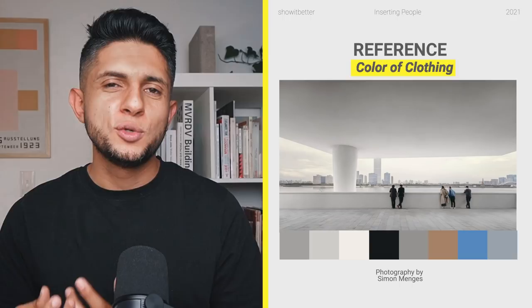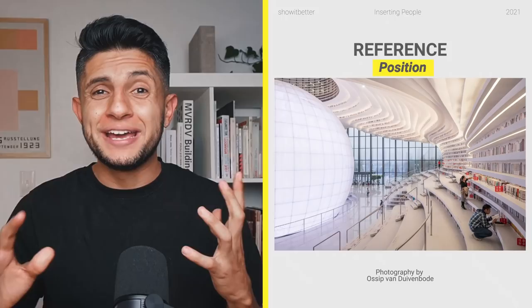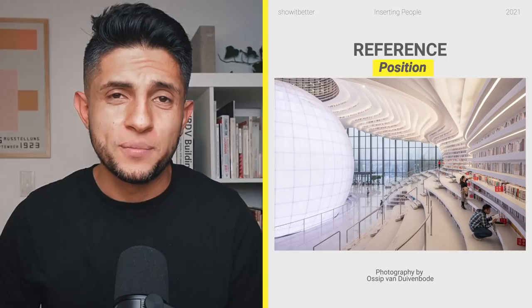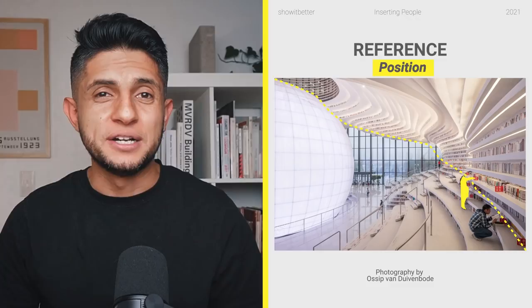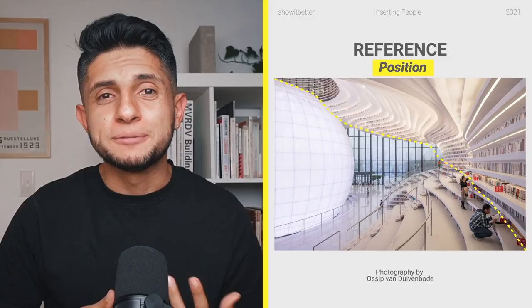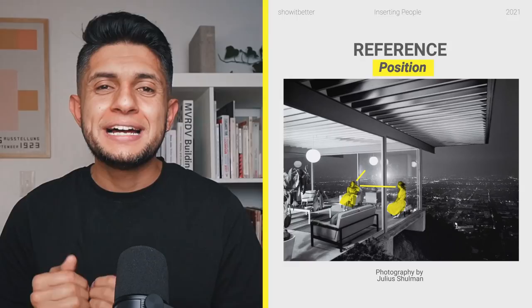Position of people is perhaps the most obvious, but the position matters in our render. Too close and they invade the frame; too far and it won't have the impact we're looking for. In the photograph of Azeb van Duvenbalde, the people are positioned so our eyes travel gently along with the design of the bookshelves. And in perhaps one of the most famous architectural photographs by Julius Schulman, the tension between the two women keeps our eyes inside the house while the urban lights also direct our eyes towards the girls.